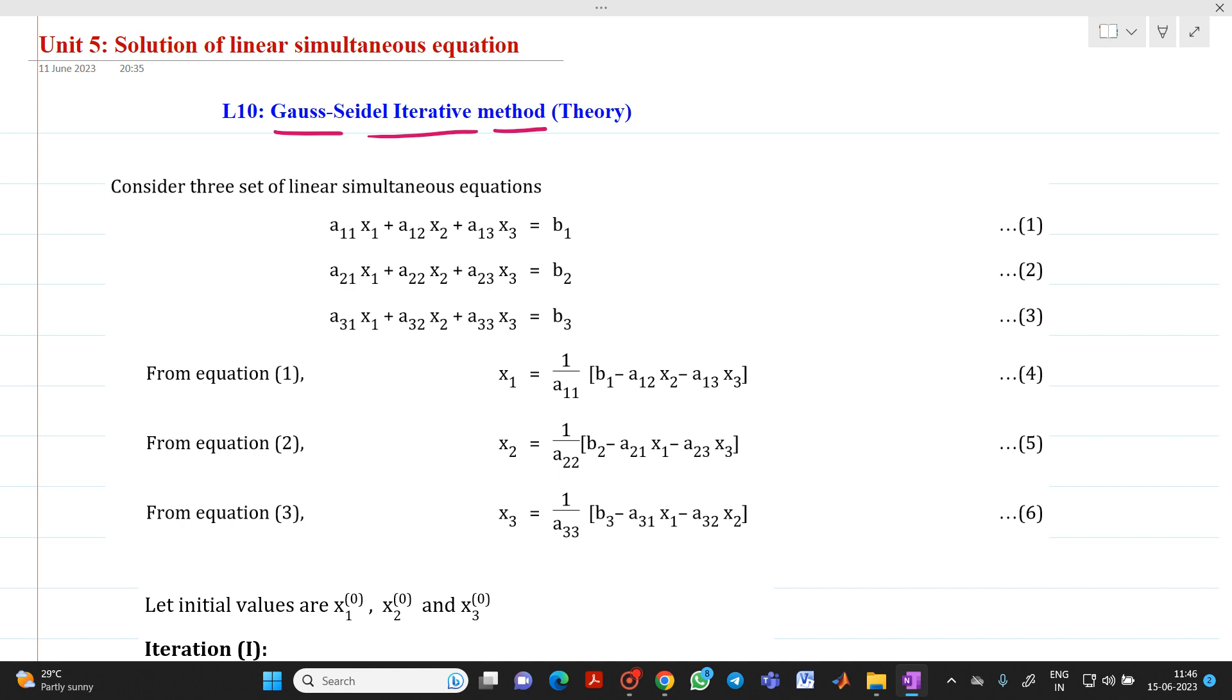Here also let us consider three equations, three linear simultaneous equations after partial pivoting. Please remember for Gauss-Jacobi method and for Gauss-Seidel method also we have to do a partial pivoting. Let us consider equation as a11x1 plus a12x2 plus a13x3 equal to b1, a21x1 plus a22x2 plus a23x3 equal to b2, a31x1 plus a32x2 plus a33x3 equal to b3.